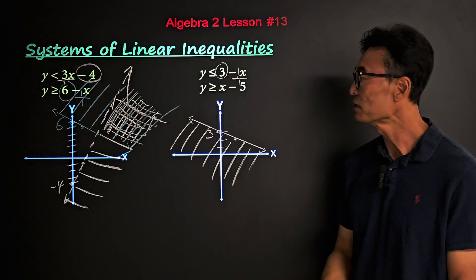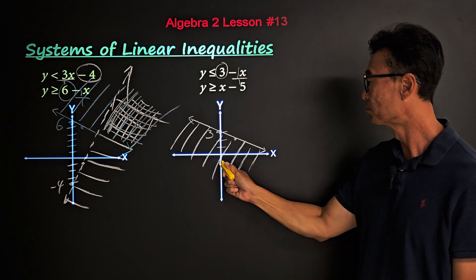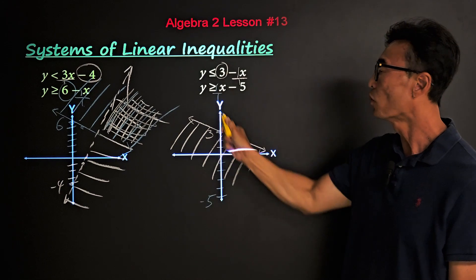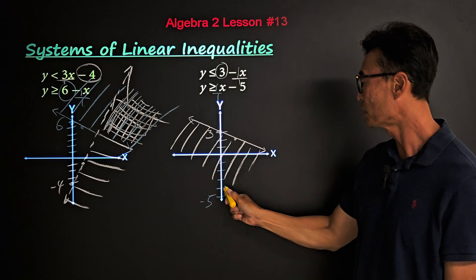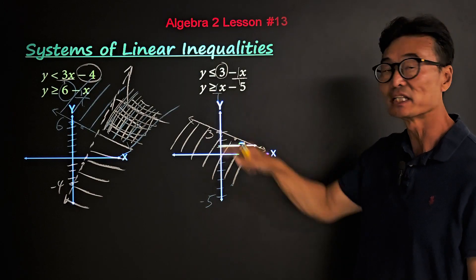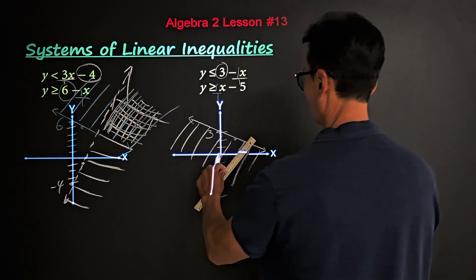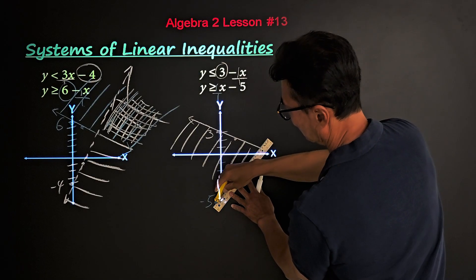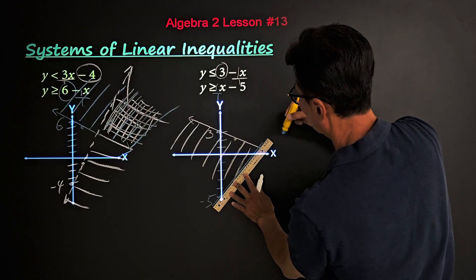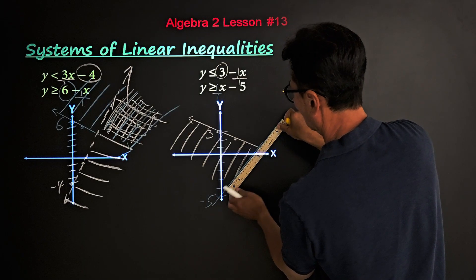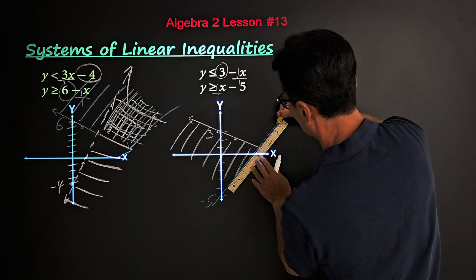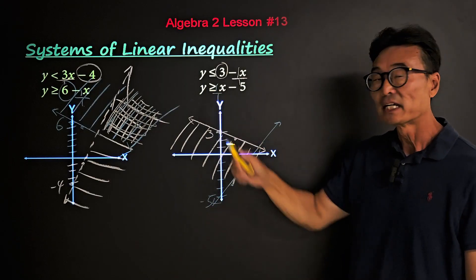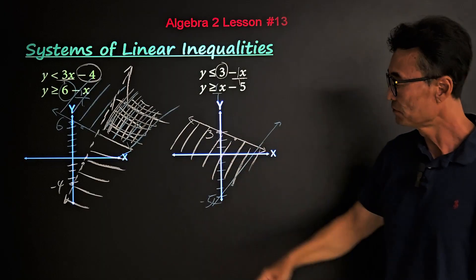Our second inequality has a y-intercept of negative five. The slope is one over one, so we go up one and one to the right. Since it's greater than or equal, it's going to be a solid line, and since it's greater than we shade above the line.